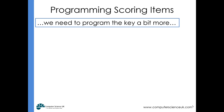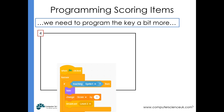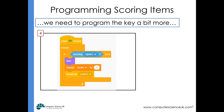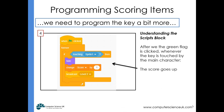I then need to program the key a bit more. Once it shows, I need a second script so it can sense when it's being touched by the main character. That script says: whenever the key is touched by the main character, the key hides, the score goes up by one, and then we broadcast a message. Everything so far should make sense, but let's think about this broadcast script.